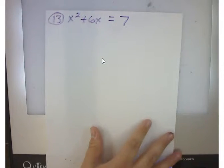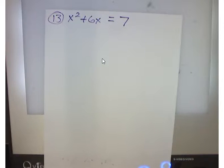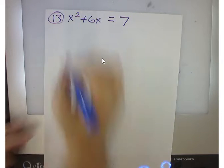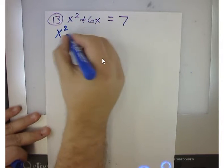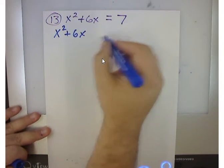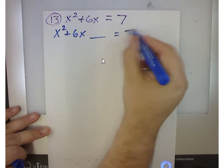My equation for number 13 is x squared plus 6x equals 7. So I've written down the equation. Now completing the square means that I'm going to add something to both sides and then take the square root. I need to add something to both sides. So on my next line, I'm going to say x squared plus 6x, leave a little blank spot there, is equal to 7.